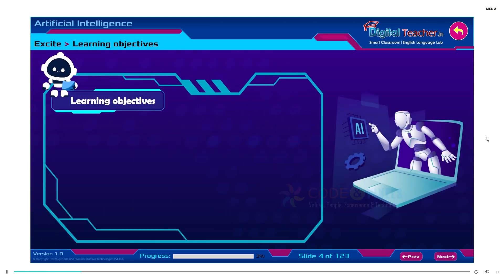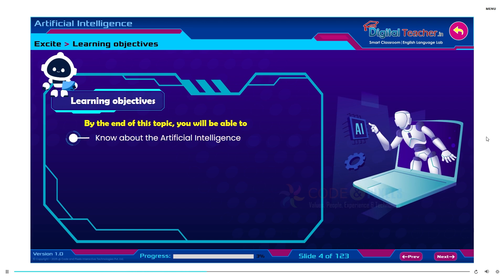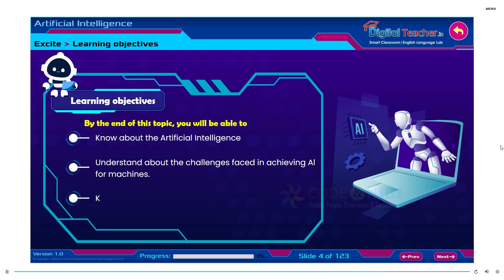Learning Objectives. By the end of this topic, you will be able to know about artificial intelligence, understand about the challenges faced in achieving AI for machines, and know the five major traits of human intelligence.